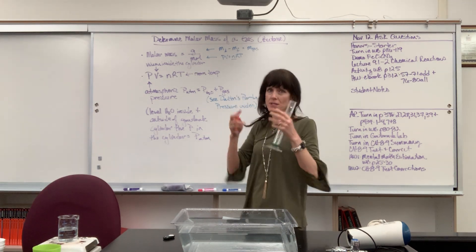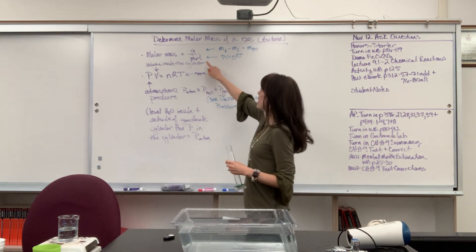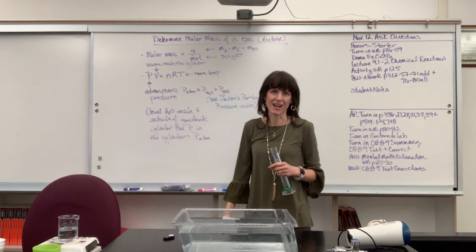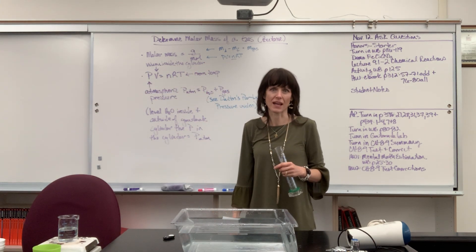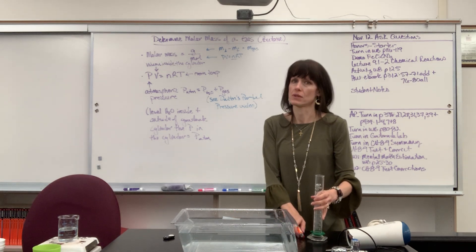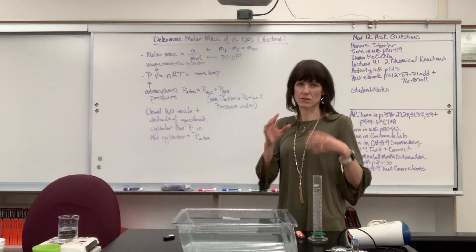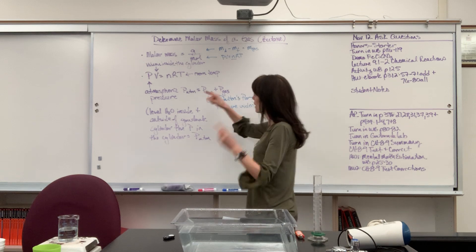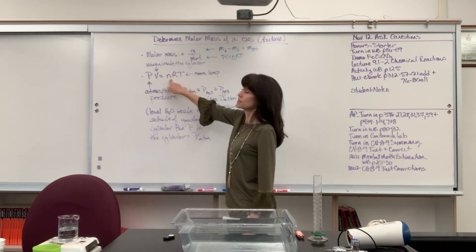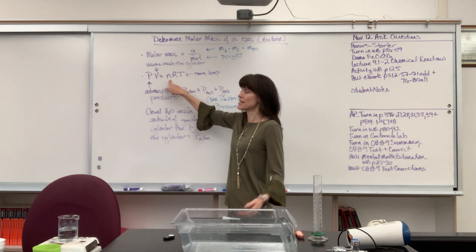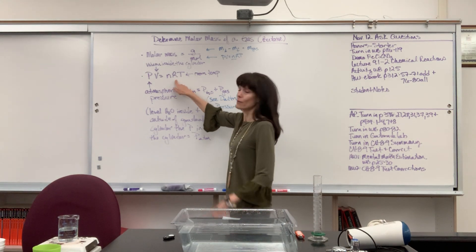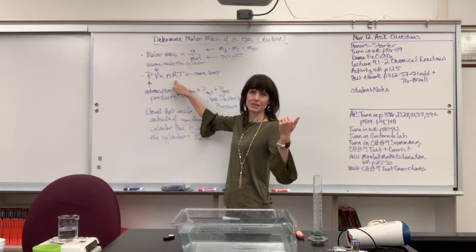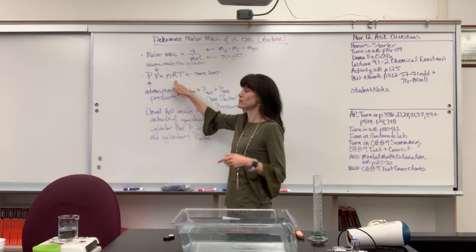Step two: I need to find moles. For this we use the ideal gas law. Our unknown is going to be N, the moles of this gas. R we always have: 0.0821 atm·L / (mol·K). So we have to get three more pieces of information.